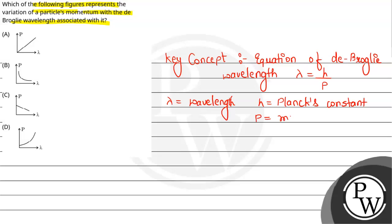Now, because h is constant, what can we write? Lambda is inversely proportional to momentum. Why? Because h is constant. And if we look at an inverse relation, the graph is something like this: a curved shape.